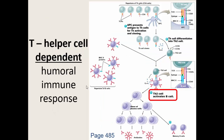However, we also have our T-helper dependent humoral immune response, where our cell-mediated branch is now talking to our humoral branch. We activate our T helper cells just like normal — we've got our CD4 cells, an epitope, and that MHC2, we're going to activate T helper cells. Those T helper cells may realize we need antibodies to kill a pathogen that we can't just kill with cytotoxic cells — we need antibodies to help out, so the T helper cell is going to differentiate into what we call a T helper 2 cell.